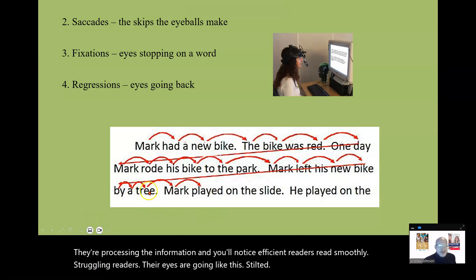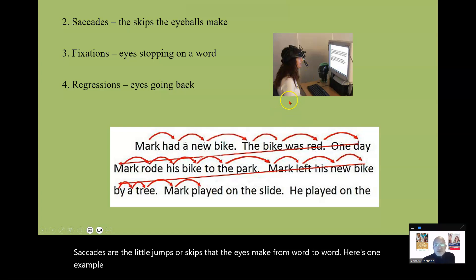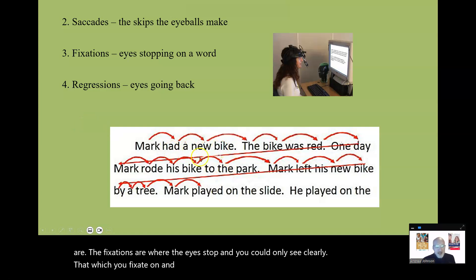Saccades are the little jumps or skips that the eyes make from word to word. Here's one example of eye movement equipment. As the person is reading, it's tracking where the eyes are. The fixations are where the eyes stop. And you can only see clearly that which you fixate on. And regressions are when the eye goes back. We think we're reading like this, but we're reading more like that.